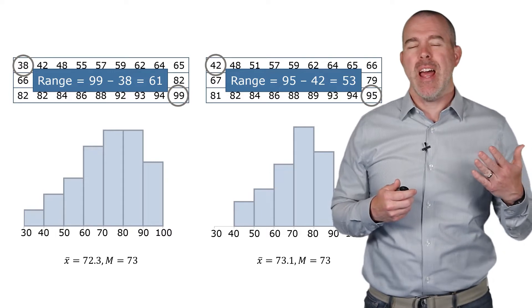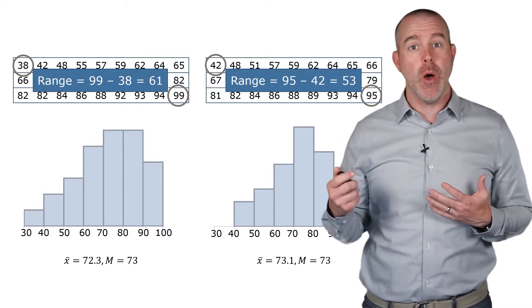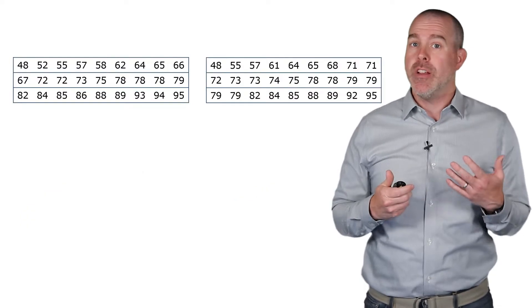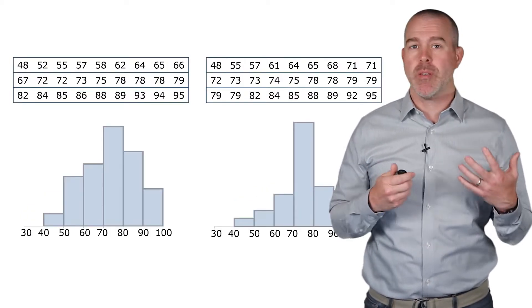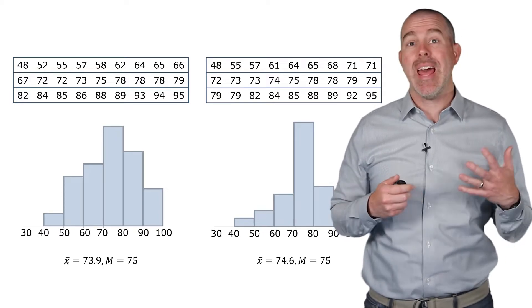But that's not very precise because it only takes into consideration the lowest value and the highest value. Here's one that's a little more subtle. Again, here's some histograms, some fake exam scores. We can see that again, they have very similar means and medians.